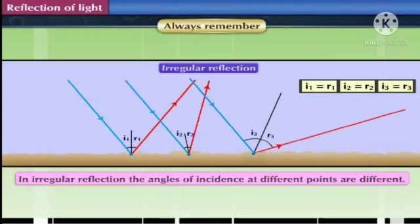And the third point is: in irregular reflection, the angle of incidence at different points are different. We will see some more topics in the next video. Thank you.